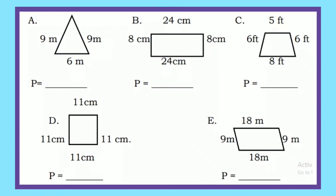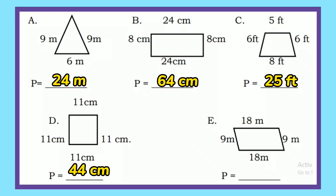Let's try another activity. Figure out the perimeter of the following figures. Let's now check your work. Letter A is 24 meters. Letter B is 64 centimeters. Letter C is 25 feet. Letter D is 44 centimeters. And Letter E is 54 meters.